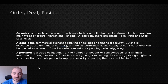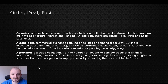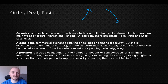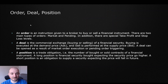Then we have a position, which is a trade obligation — the number of bought or sold contracts of a financial instrument. A long position is basically when we are expecting the price to go up. A short position is basically when we are expecting the price to go down. Long equals buy, short equals sell, to make it a bit more simple.